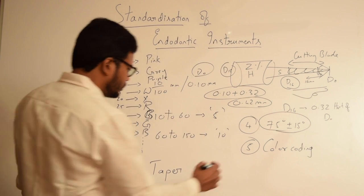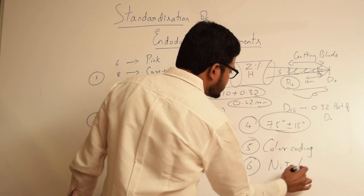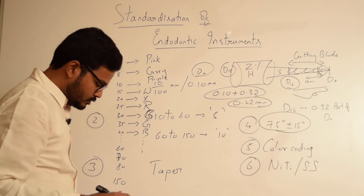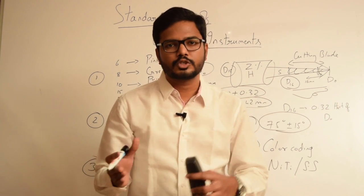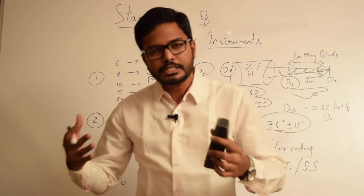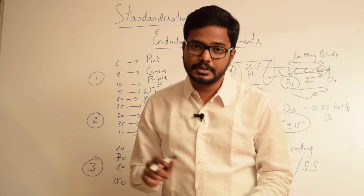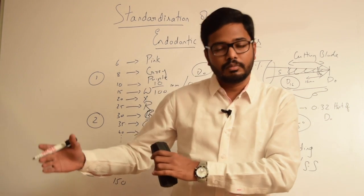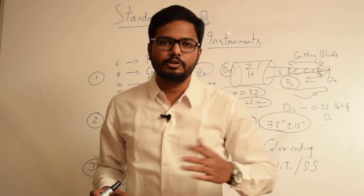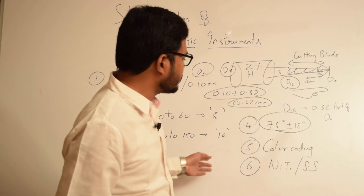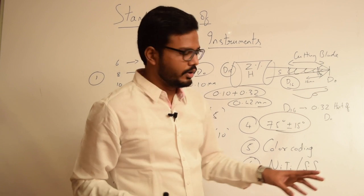We also have NiTi instruments as well as stainless steel instruments. Previously, carbon steel instruments were used, but now stainless steel and NiTi instruments are used to manufacture endodontic files because they are less prone to fracture due to their increased flexibility, and most importantly their corrosion resistance — carbon steels are more prone to corrosion from sodium hypochlorite. These instruments are comparatively resistant to corrosion. The introduction of NiTi and stainless steel is also considered part of the standardization of endodontic instruments.